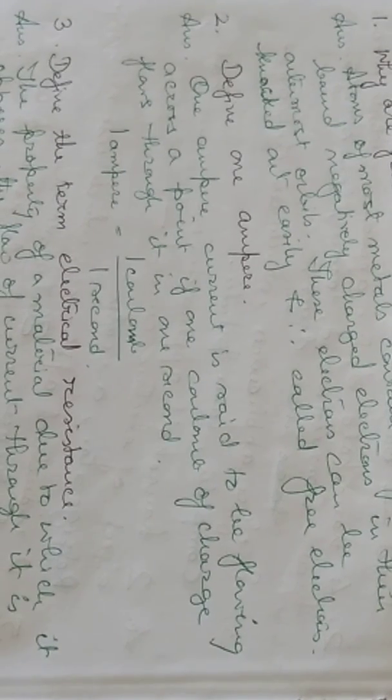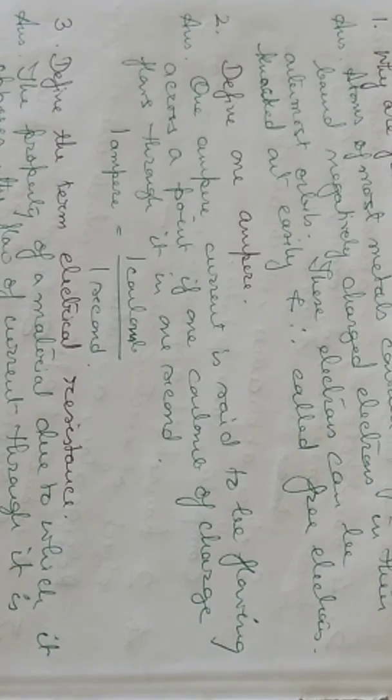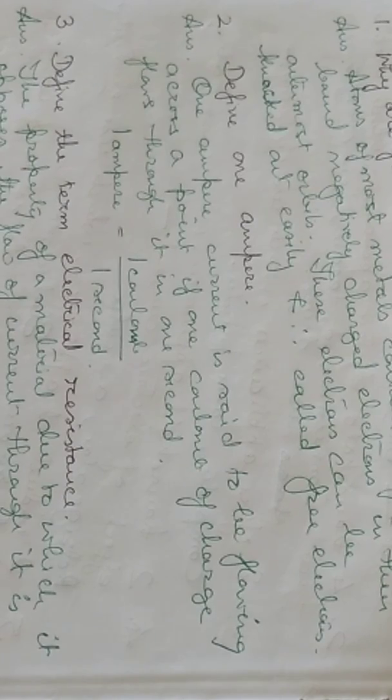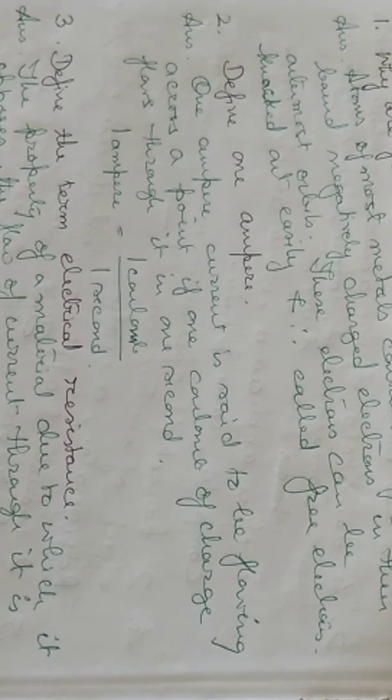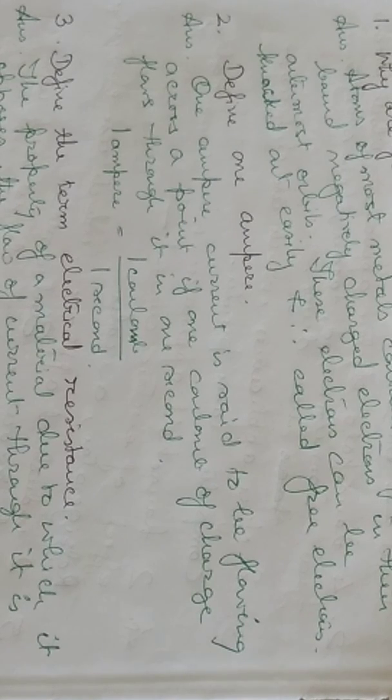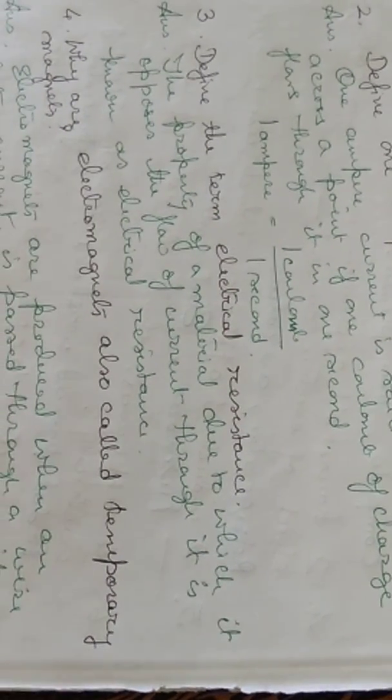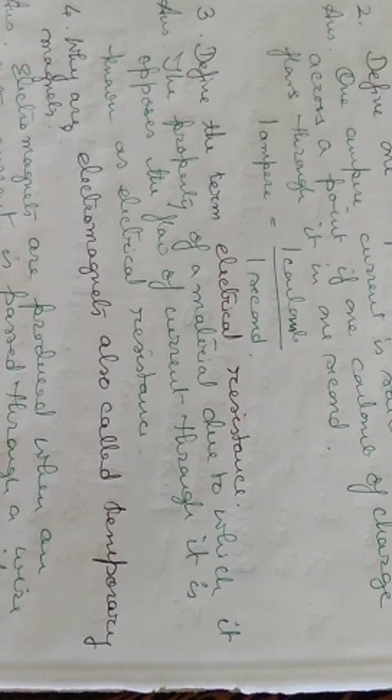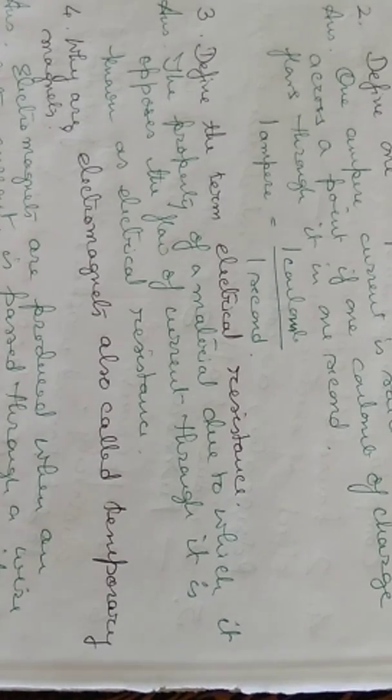Second question, define one ampere. One ampere current is said to be flowing across a point if one coulomb of charge flows through it in one second. So one ampere is equal to one coulomb by one second. Define the term electrical resistance: the property of material due to which it opposes the flow of current through it is known as electrical resistance.